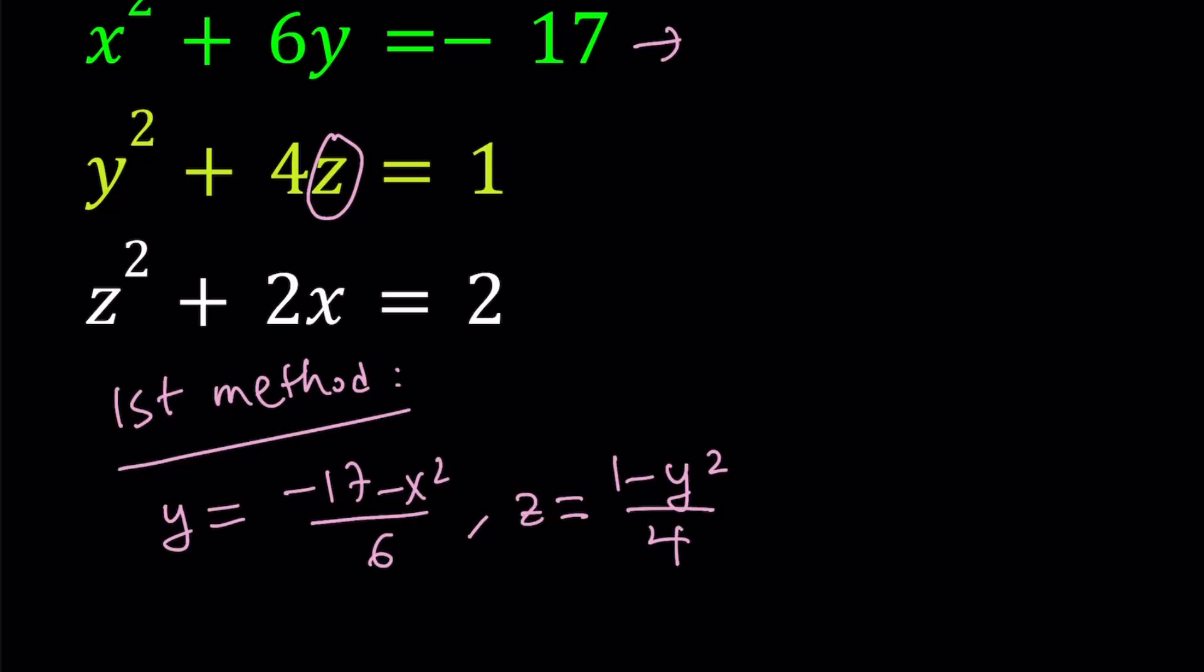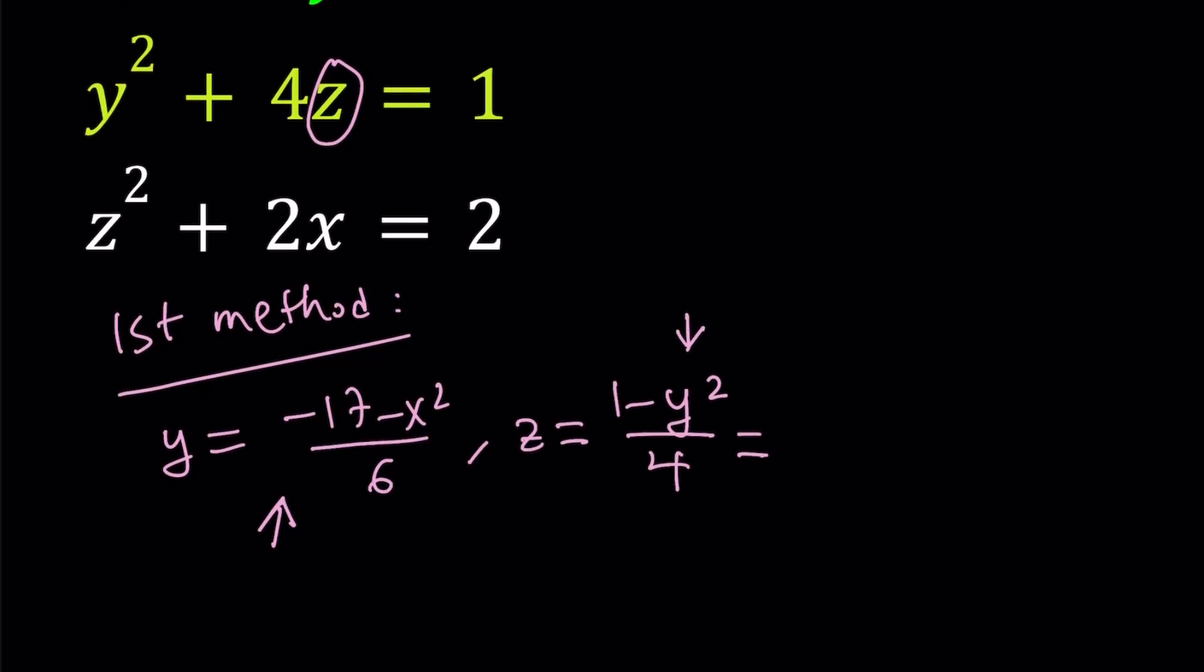Now, notice that we already have an expression for y. y was written in terms of x. So now I can substitute that here. And that's going to give me an expression in terms of x for z. So let's go ahead and replace y with what it is.